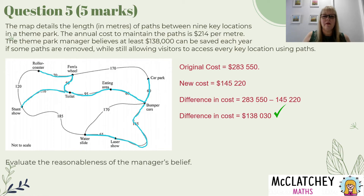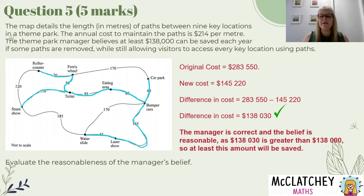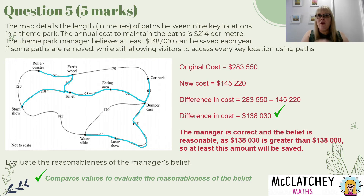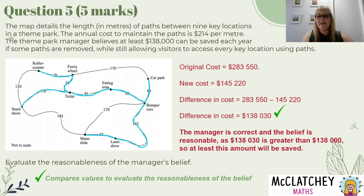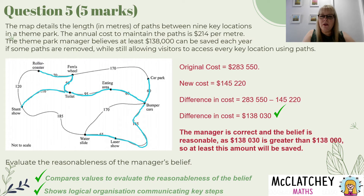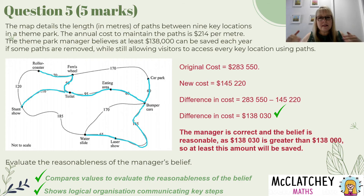I get a mark for calculating the difference in costs. The evaluation part means writing a sentence or two. First I say the manager is correct and the belief is reasonable — I have to actually address whether it's reasonable. Because $138,030 is greater than $138,000, at least that amount will be saved. If I just say the manager's correct without comparing the two values, it's not good enough. I need to state that one value is bigger than the other and therefore that money is being saved. There was also a final mark awarded for logical organisation and communicating the key steps.